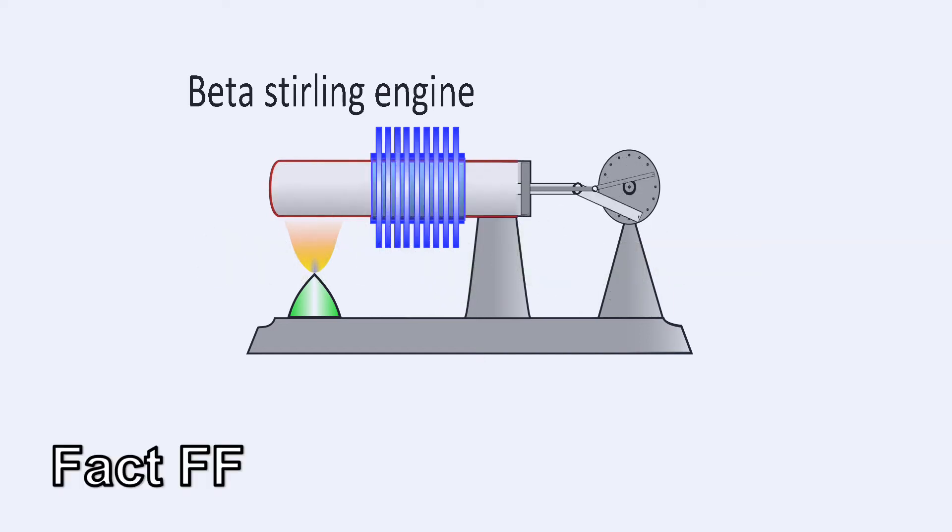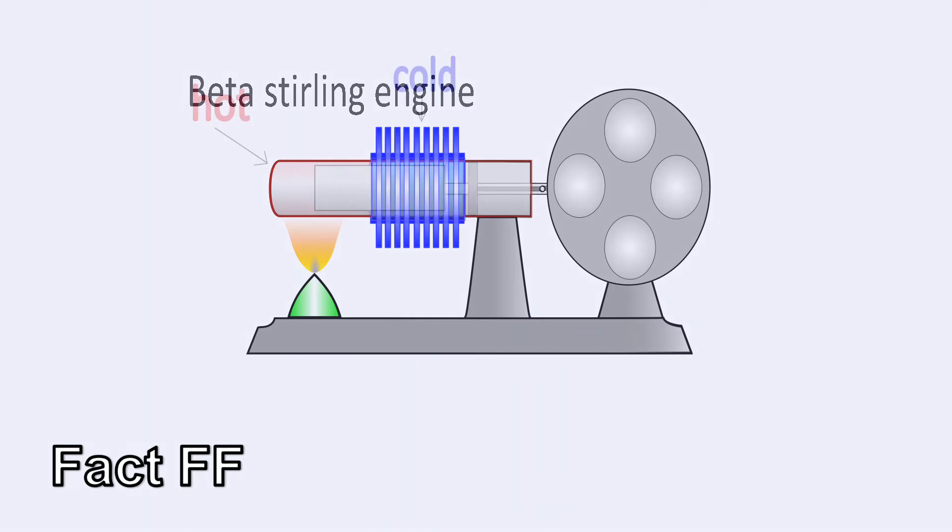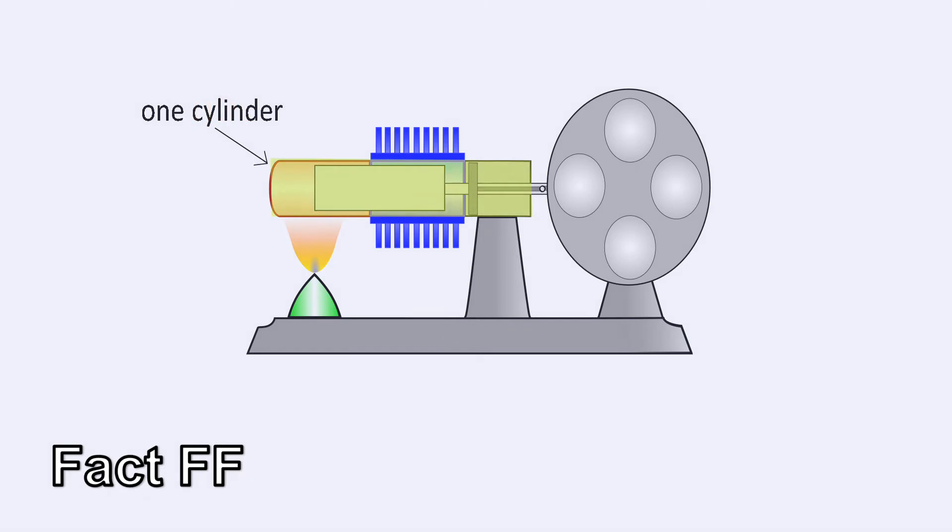In this video, we will look at the Beta Stirling engine. A Beta Stirling engine has a cold and hot side and has just one cylinder.